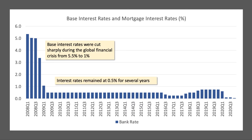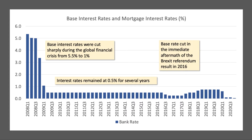Interest rates stayed at 0.5% in the UK from 2009 all the way through to 2016. There was a further cut in the immediate aftermath of the Brexit referendum in June of 2016.